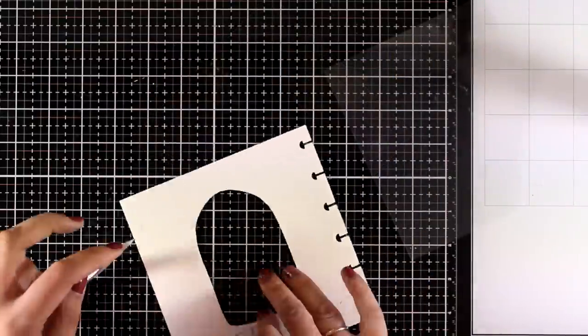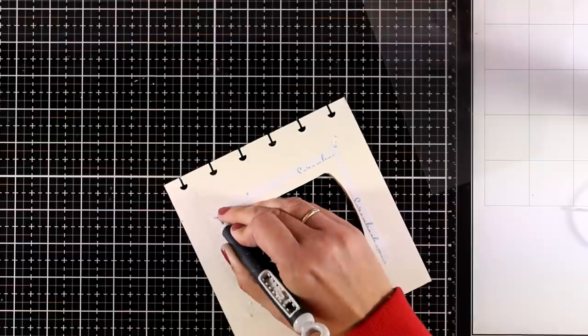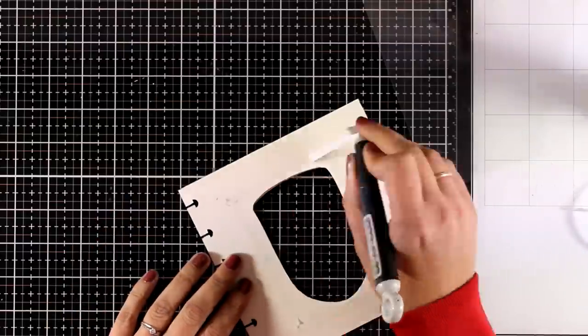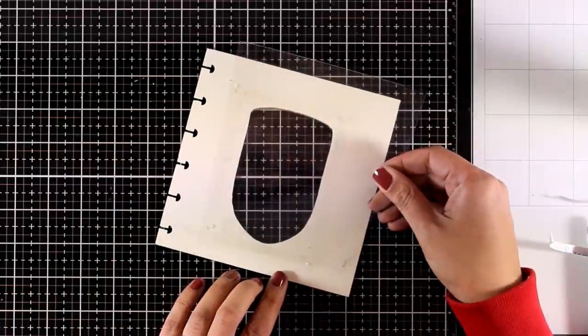Now I'm going to work at the back and I'm going to add some tape adhesive all around the window and then I can stick on top some acetate. This is going to give a lovely shiny front which is going to look as if I have glass actually there.